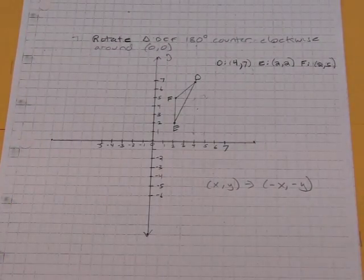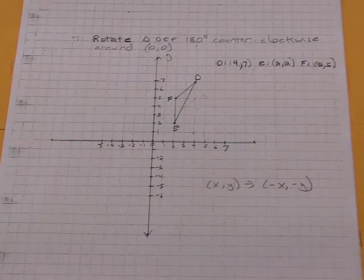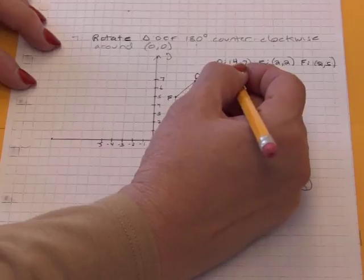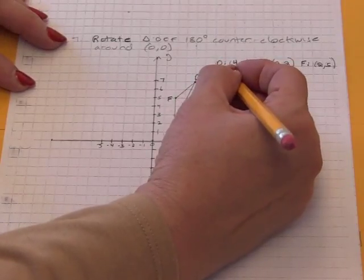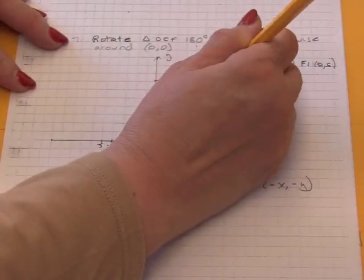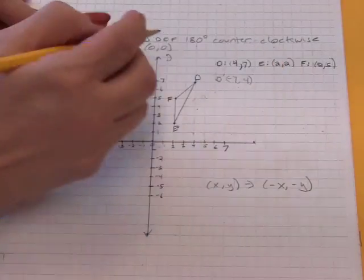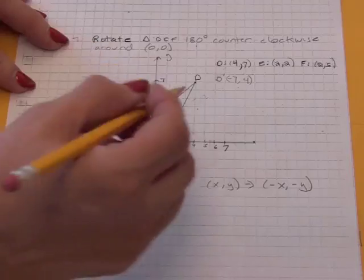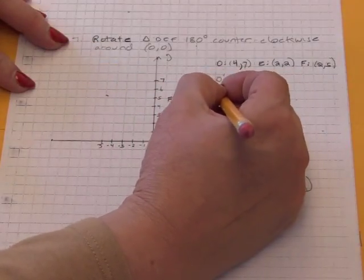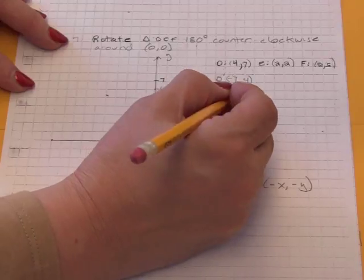We have a rule that took us 90 degrees counterclockwise. Suppose we wanted to go 180 degrees counterclockwise. Well, we could start by doing 90 degrees. That would give us (-7,4) for D'. But now I want to go 180 degrees counterclockwise. So I should do 90 again. Switch them to get D' for -7, and then again make the X coordinate negative.